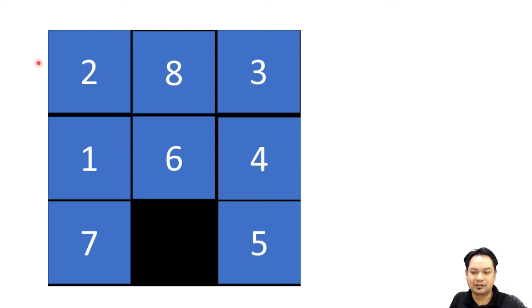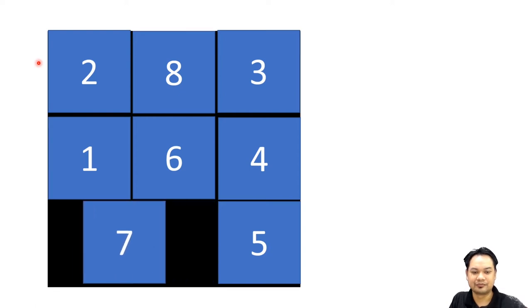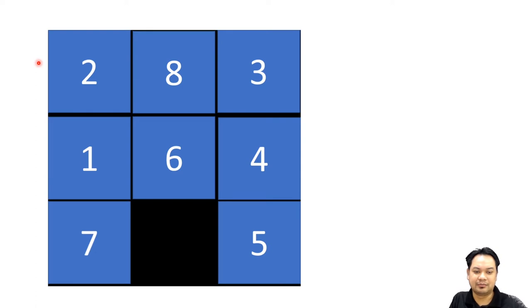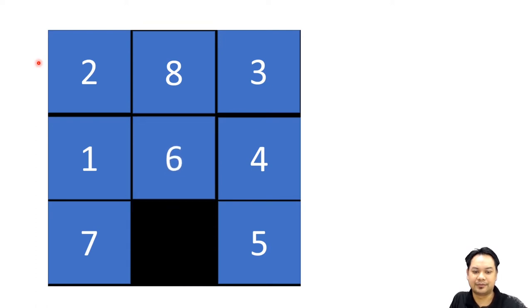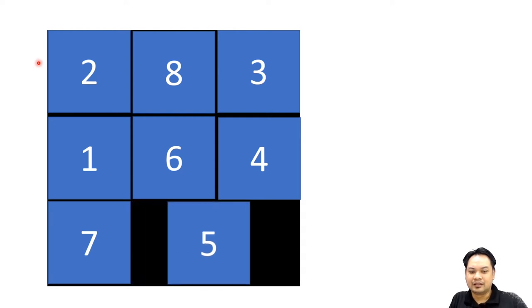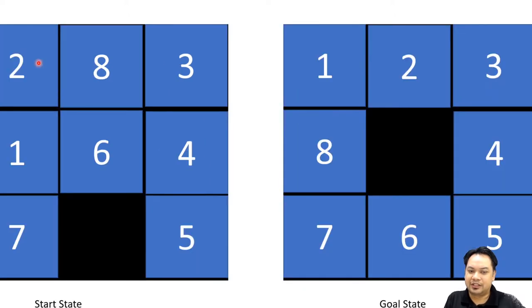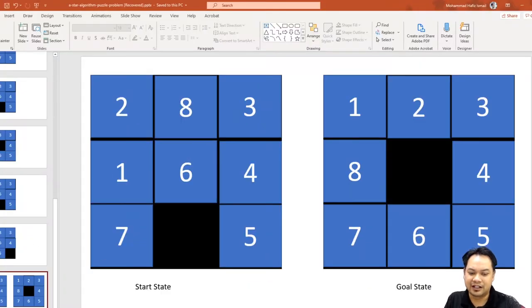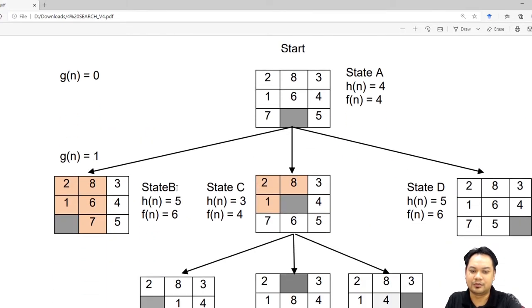In this case, H(N) is 4. You can move 7 to the right, or move 6 to the bottom, or move 5 to the left. Usually, if a human would do this, they would have to try it based on trial and error. But if the computer is trying to do this, it will calculate the cost. The A-Star algorithm depicts how the computer would calculate the cost to achieve the minimal movement in order to achieve the goal.